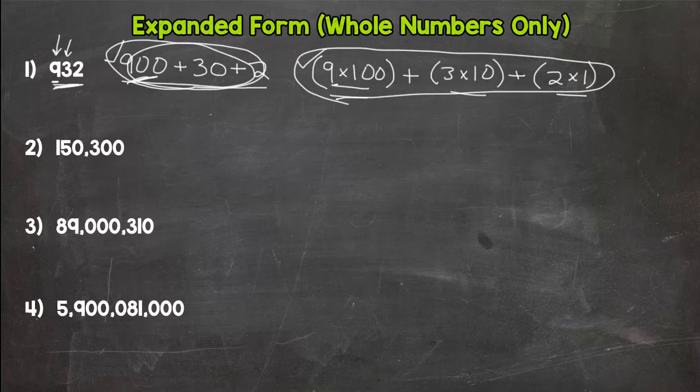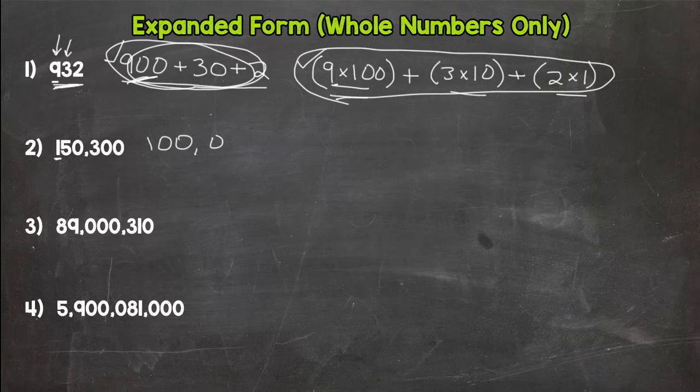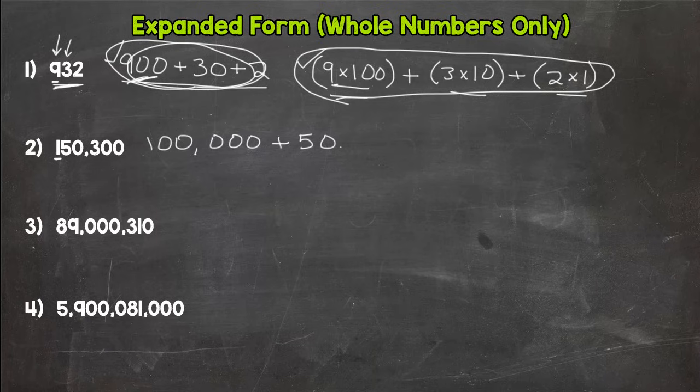Alright, let's go to number two. So we'll expand this out starting with the value of the greatest value digit, which is the 1, and that 1 is worth 100,000 plus the value of the 5, which is 50,000, plus how much is that 3 worth? 300.